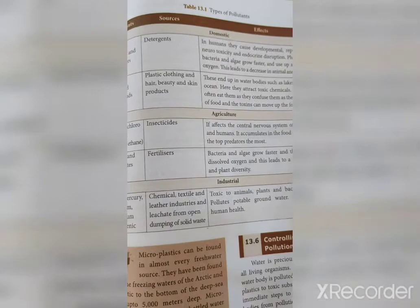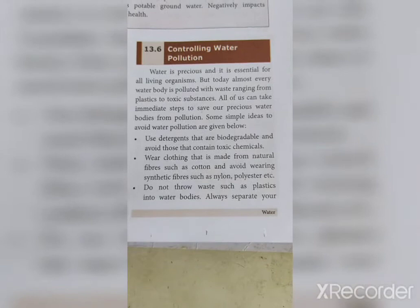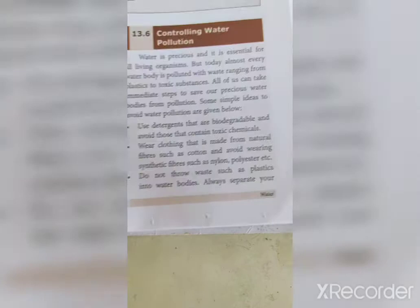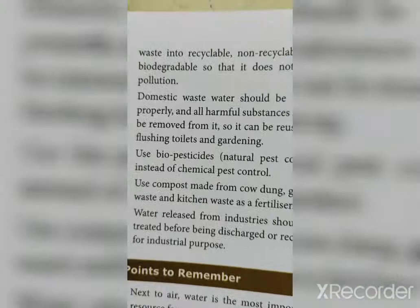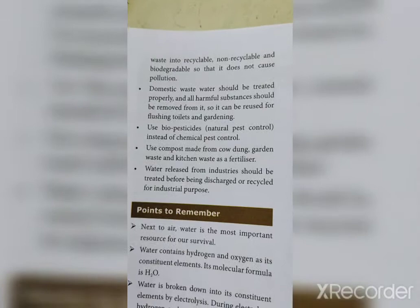Control measures for water pollution: use detergents that are biodegradable and avoid those containing toxic chemicals. Wear clothes made from natural fibers such as cotton and avoid synthetic fibers such as nylon and polyester. Do not throw waste such as plastics into water bodies. Always separate your waste into recyclable, non-recyclable and biodegradable. Domestic wastewater should be treated properly to remove all harmful substances so it can be reused for flushing toilets and gardening.